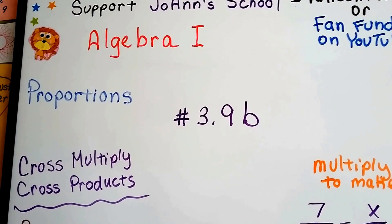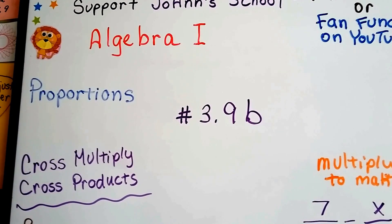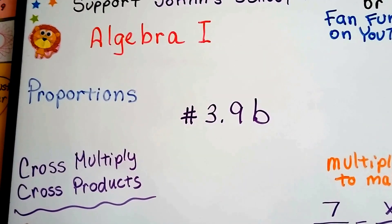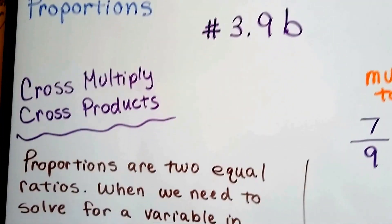Algebra 1, number 3.9b. We're talking about proportions in this unit. Aren't you excited? We're going to talk about cross-multiplying and cross-products.